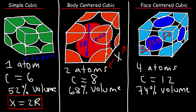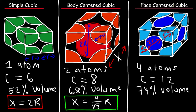For the body centered cubic structure, the edge length x is equal to 4 over root 3 times the atomic radius. This information is useful if you're given the density of an element and want to find the edge length or atomic radius. For the face centered cubic structure, the edge length is equal to the square root of 8 times r.